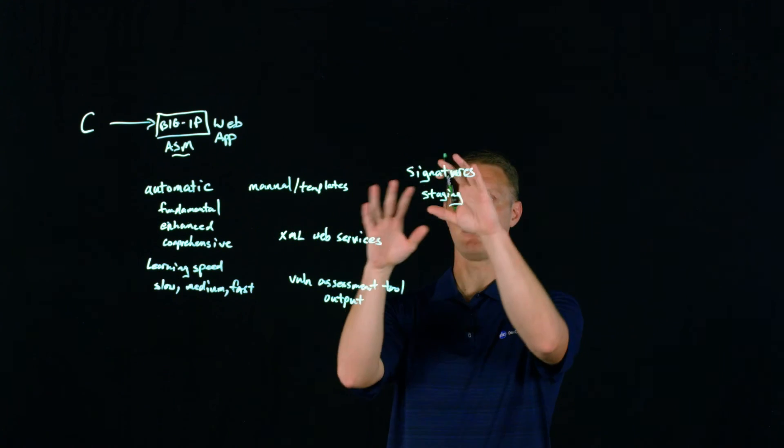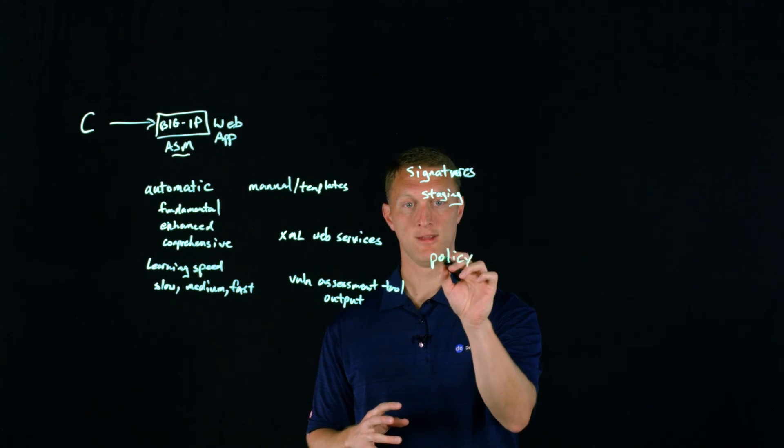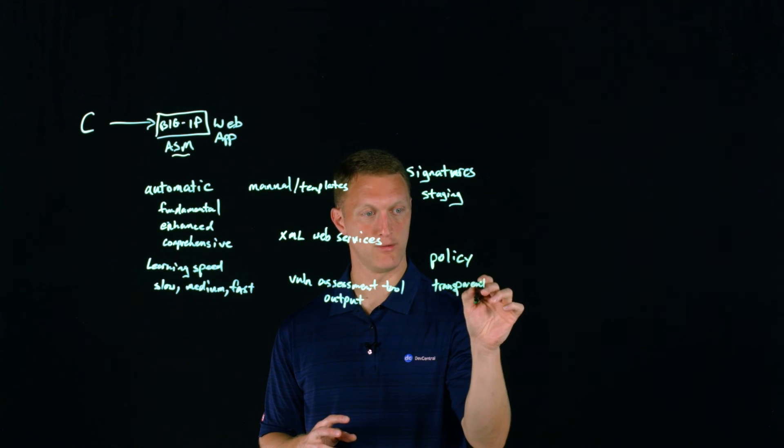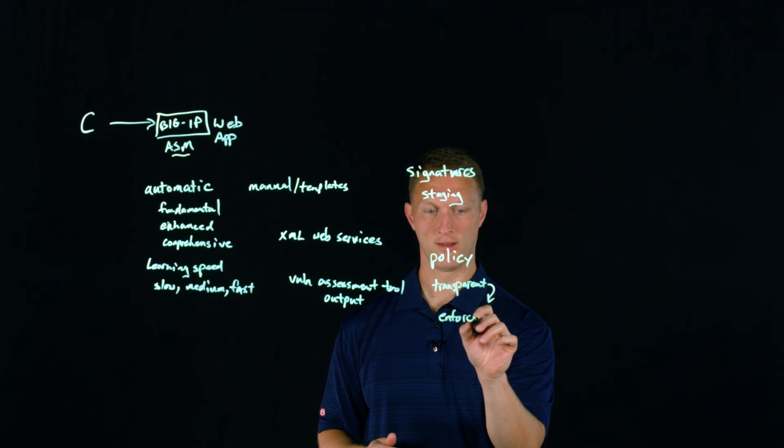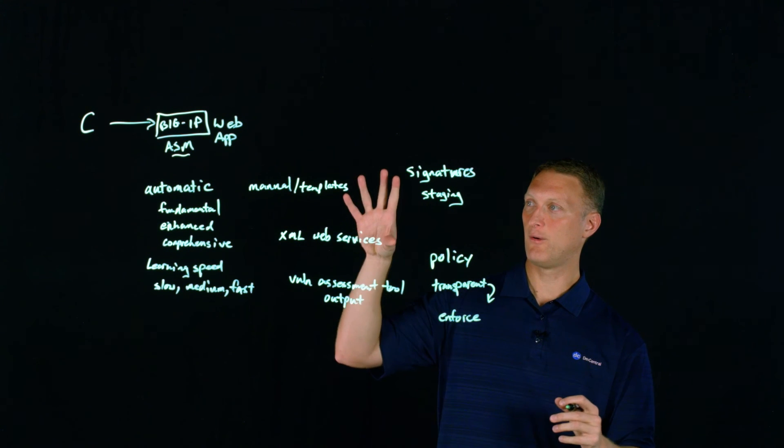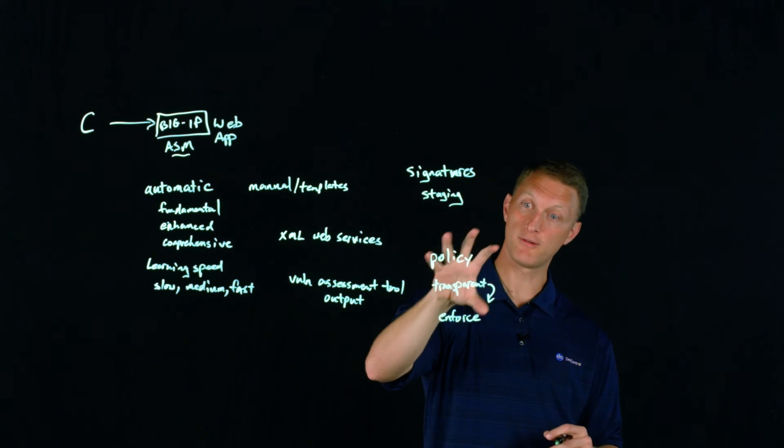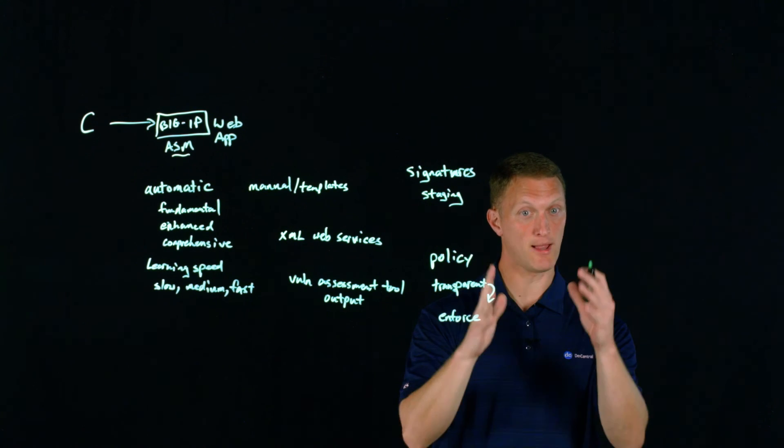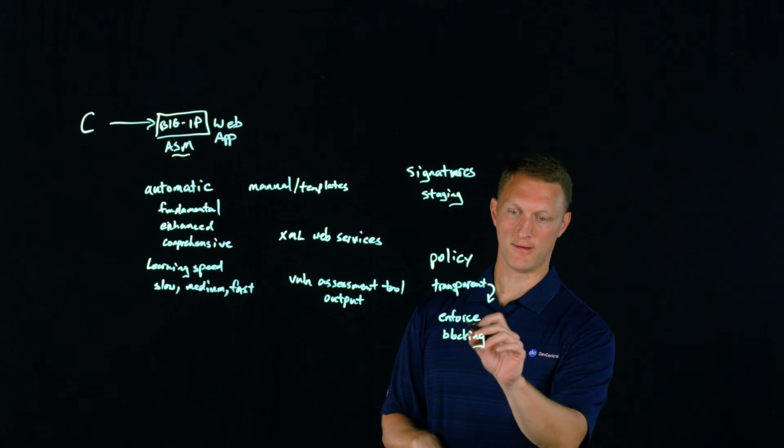And then the final thing that I'll mention is when your policy is all built, you have your signatures applied, they're no longer in staging, then the policy itself needs to move. So I'll just put once the policy is built, then you need to move from transparent mode, which is when it's in transparent mode, it doesn't block anything either. It's just watching everything. So you need to go from transparent. I'll put a little arrow down here to enforce. So from transparent to enforce. So once the policy is in enforced mode, then it's going to start blocking traffic. So it's nice to know again, how to build out an ASM policy, all the different options that you have. You have a lot of different signatures that you can apply to any of these policies. And then once the policy is built, keep it in transparent mode for that period of time that you need to watch the traffic and have it learn everything. But then once you're ready to go, once you're ready for it to block traffic, then you move it from transparent into enforce or blocking mode actually is the nomenclature that's used. So in enforced or blocking mode. So once it's in blocking mode, then you're going to start blocking traffic.